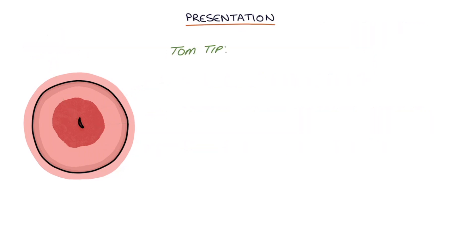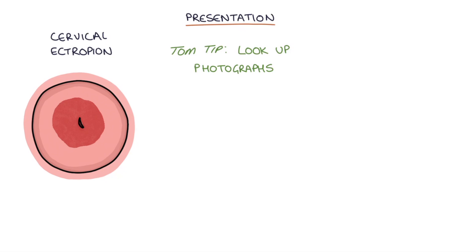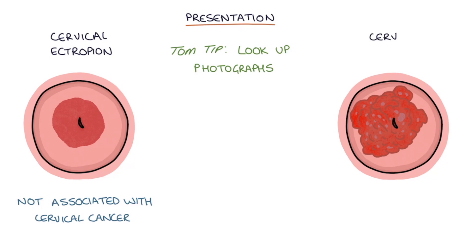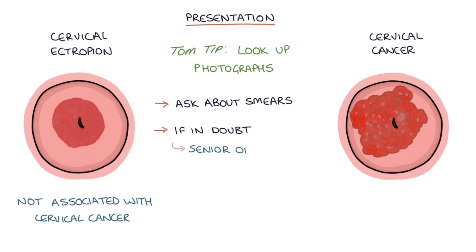A Tom tip for you: it's worth looking up photographs of cervical ectropion and becoming familiar with their appearance. They're very common to see on speculum examination and could look alarming the first time you see one. Ectropions are not associated with cervical cancer in any way, but it's worth getting familiar with distinguishing them from the appearance of cervical cancer. If you see one, always ask about smears, and if you're in any doubt, get a senior opinion and consider referral for colposcopy to look at the ectropion in detail.